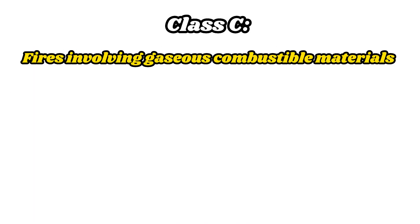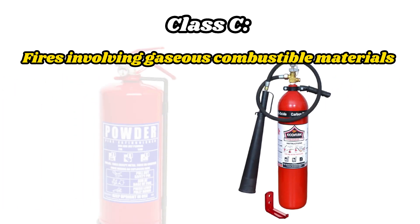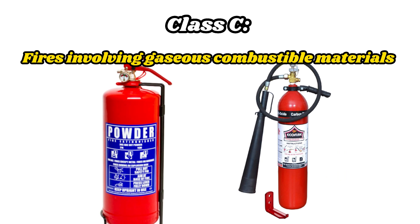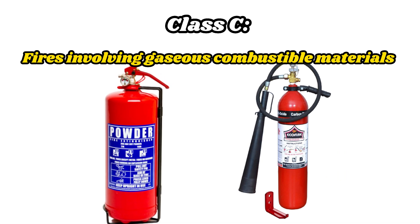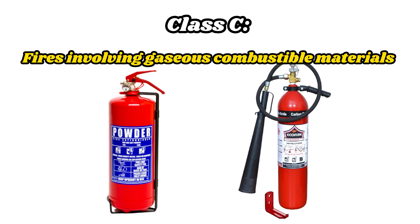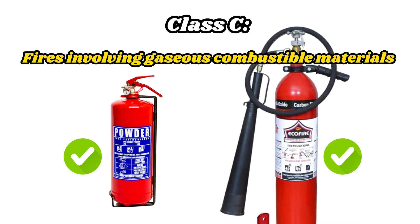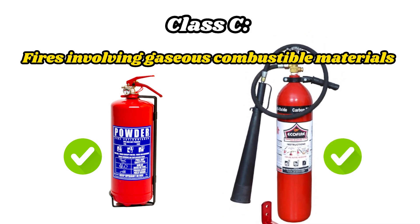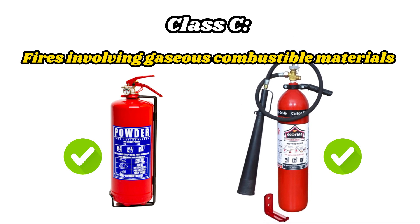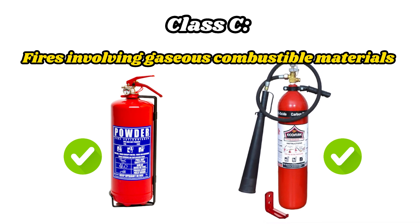Class C fires can be extinguished with a dry powder fire extinguisher, as it does not conduct electricity and does not create sparks which can cause a gas explosion. A dry powder fire extinguisher also interrupts the chemical reaction occurring in the burning gas, thereby extinguishing the fire. CO2 is also an effective extinguisher for gas fires, as it removes oxygen from the surrounding atmosphere and interrupts the chain reaction of combustion, making it effective for gases such as methane or propane.